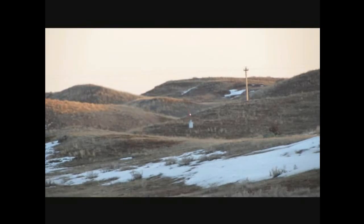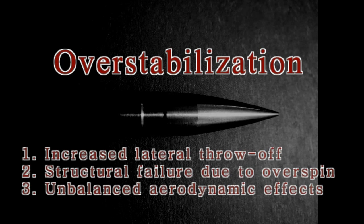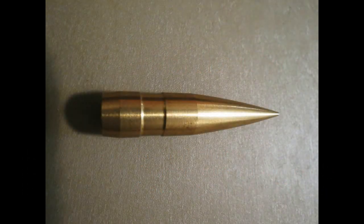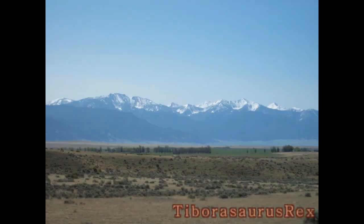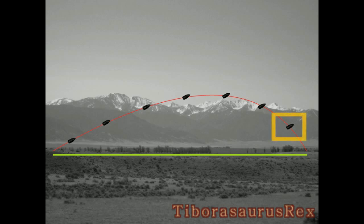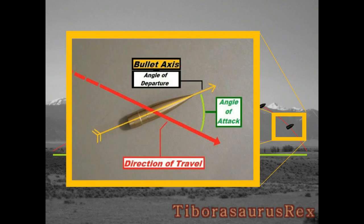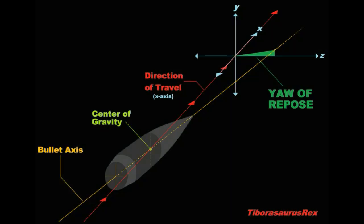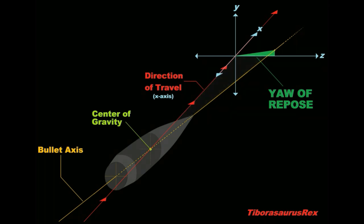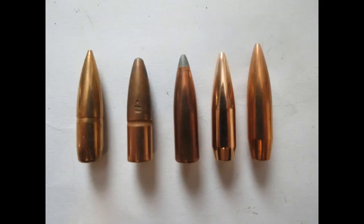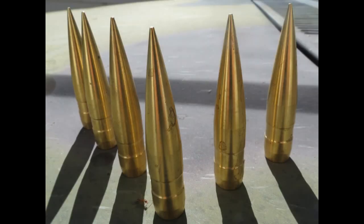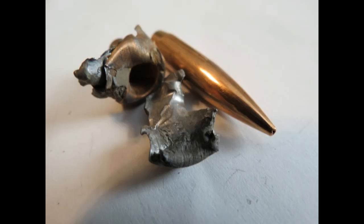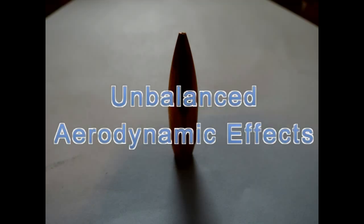Another thing that can occur due to over-stabilization is structural failure due to overspin. The main concern for extreme long-range precision shooting is that unbalanced aerodynamic effects — including aerodynamic jump but not limited to that — can really happen, especially when gyroscopic effects of over-stabilization cause a bullet to lose its dynamic stability and reduce its tractability. This reduction in tractability produces yaw of repose, giving you things like spin drift, increased drag effects at long range, and transonic problems.